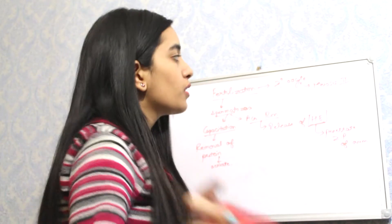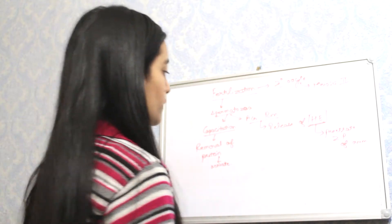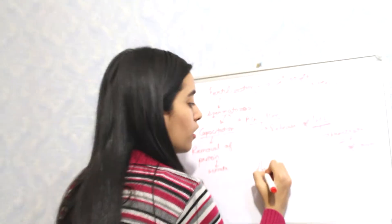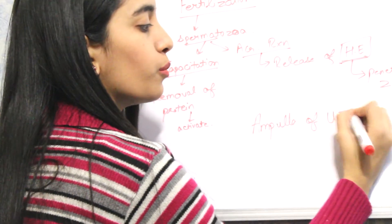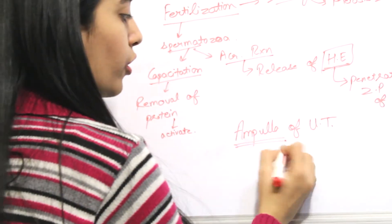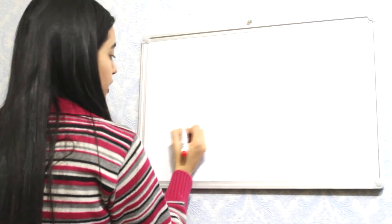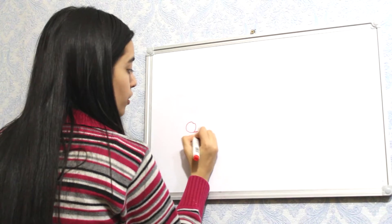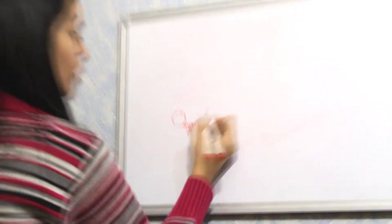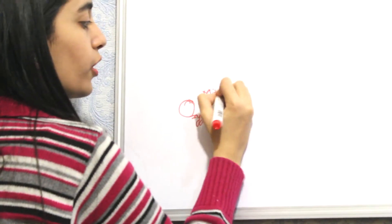A very important point: fertilization occurs in the ampulla — the ampulla part of the uterine tube. The male and female gametes fuse together to form a zygote, which then undergoes mitotic division.